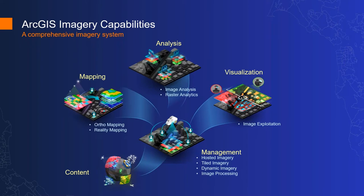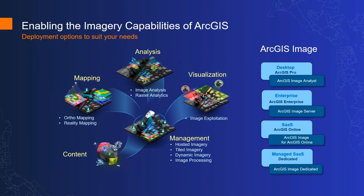What I wanted to start with is talking about the ArcGIS system and its amazing set of capabilities. ArcGIS has five key sub-capabilities related to imagery: content — a vast amount of content available; management — how we make that content accessible; mapping — how to take imagery and convert it into products such as orthophotos and terrain models; analysis — the focus of today's webinar; and visualization and exploitation — how we take imagery and analysis results and share them with users and create applications.